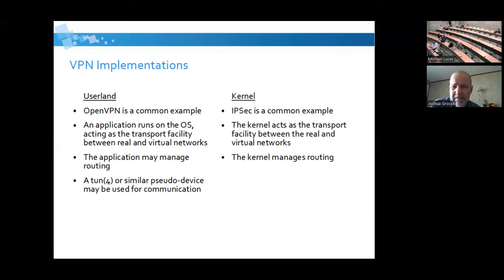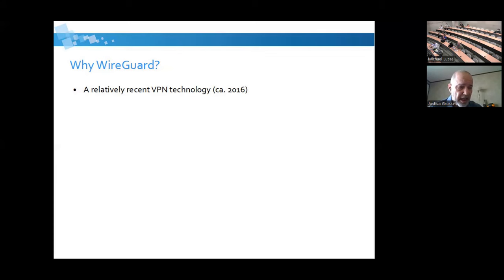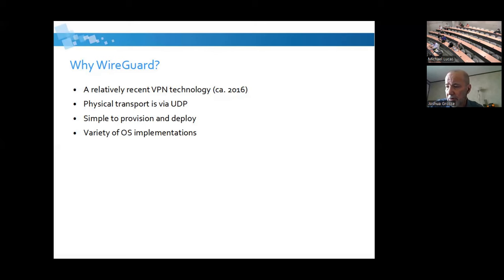If you have an OpenVPN system, for example, you'll connect to your protocol stack through a tun device. I chose WireGuard primarily because five years ago it was suddenly available as a kernel driver on OpenBSD — a very simplistic implementation. It's only about seven or eight years old. Its physical transport is UDP, which is a well-understood protocol. It was very simple to provision and deploy, and I wanted it across multiple OSes: Windows, Android, and OpenBSD in particular were the three I was interested in.